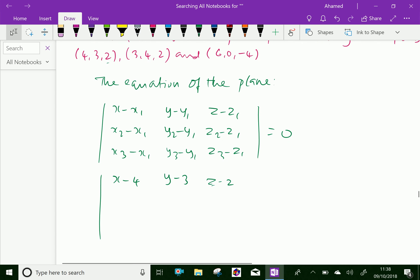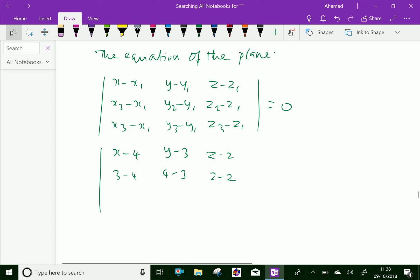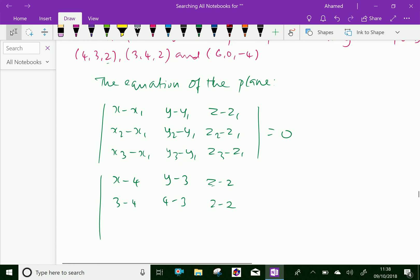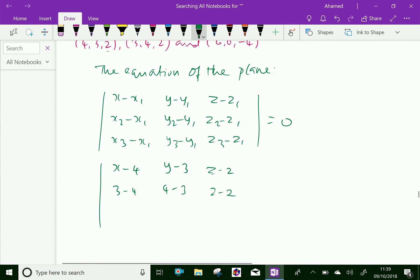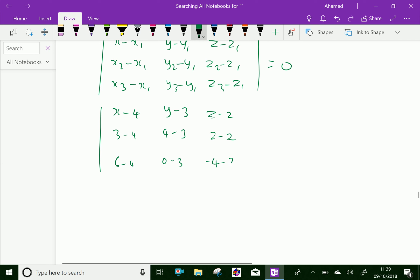Now x2 minus x1, that is 3 minus 4. Here, 4 minus 3 and 2 minus 2. And third, x3 minus x1, that is 6 minus 4, 0 minus 3, and minus 4 minus 2, equal 0.